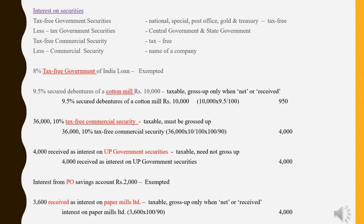Now let us cover interest on securities with examples. First, identify the type of security using keywords. Keywords for tax-free government securities are: national, special, post office, gold, treasury, and the word 'tax-free.' If these words appear, it is a tax-free government security. If only 'central government' or 'state government' is mentioned, it is a less-tax government security. If a company name is present, it is a commercial security; if 'tax-free' is also specified, it is a tax-free commercial security; otherwise it is a less-tax commercial security.